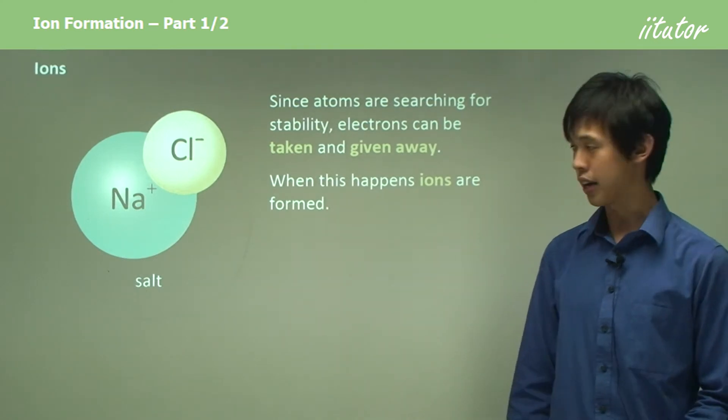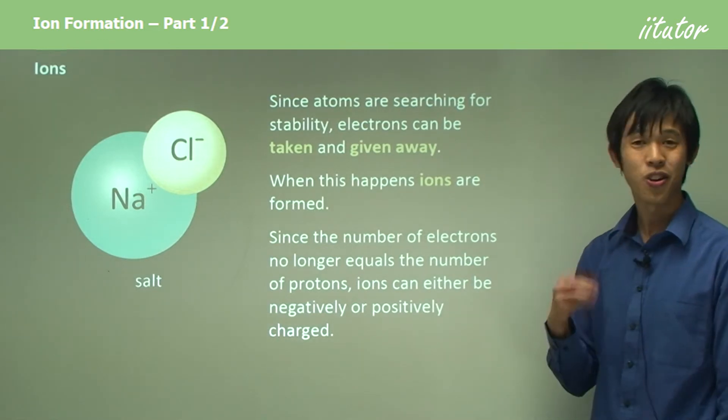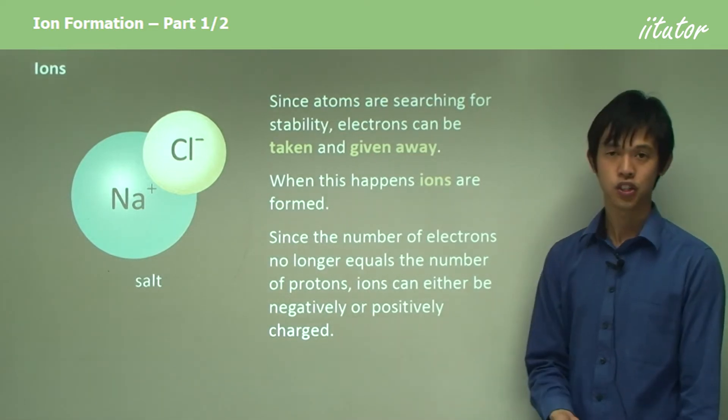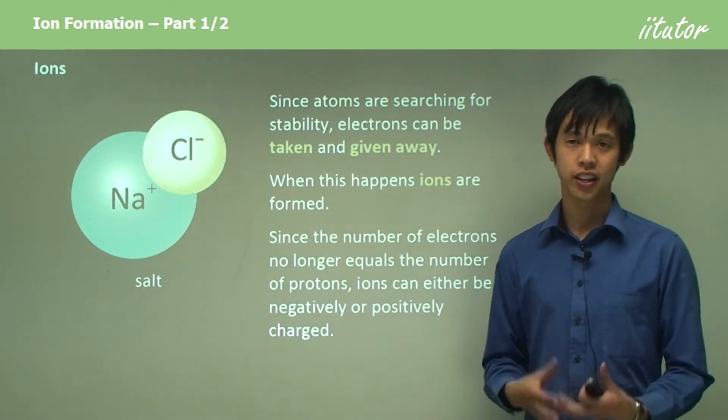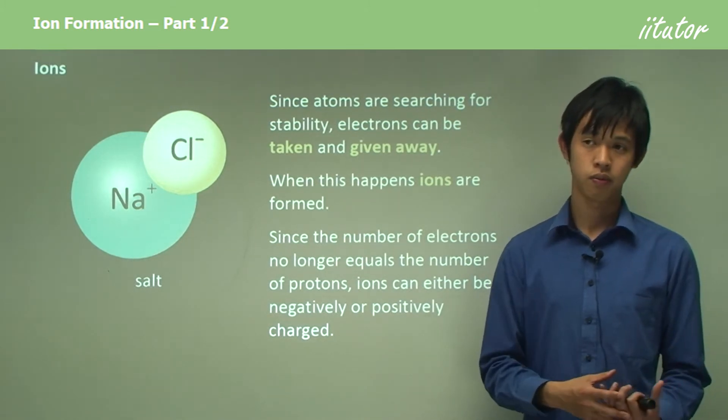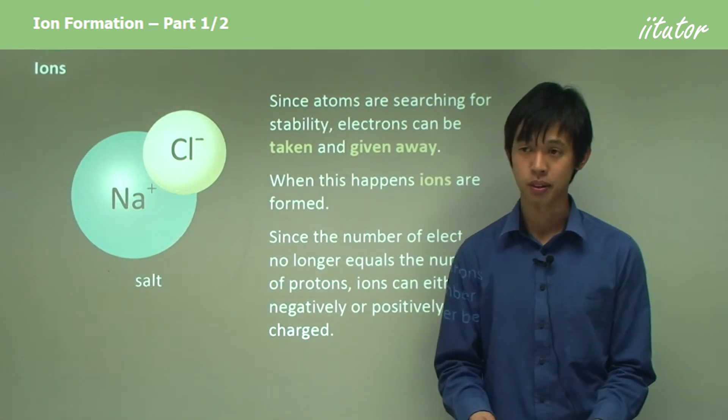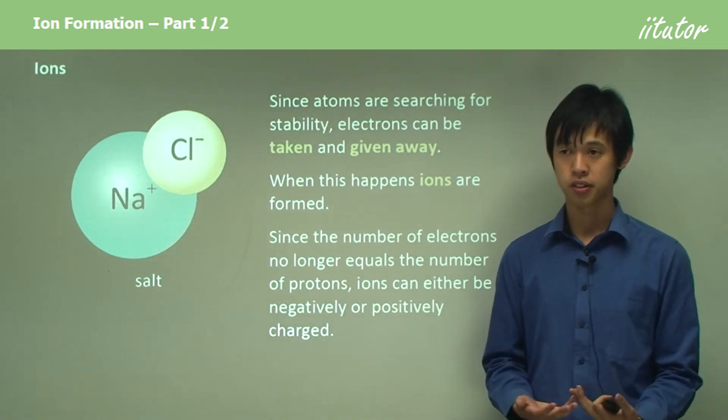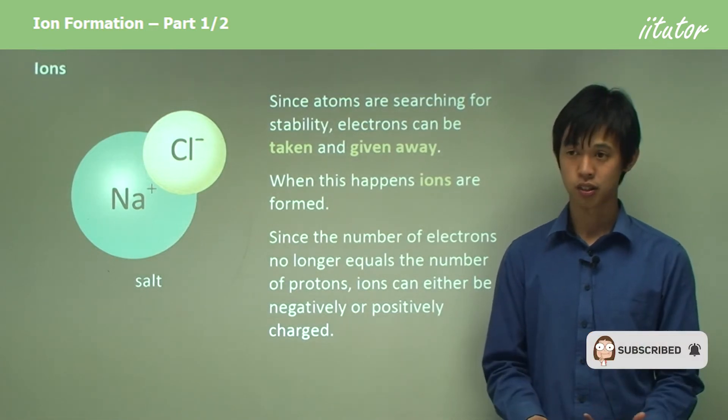So when this happens, ions are formed. When an electron is given away or taken in, that's when you form an ion. Because when you either give away or take an electron, the number of electrons no longer equals the number of protons. And so ions can either be negatively or positively charged. For instance, if I was to give away an electron, then I would have one less electron than protons. There would be more positive charges than negative charges, so I would be a positively charged ion. Now if the opposite happened, I was to take in an electron, now I have one more electron than I do protons, which means I will be negatively charged because there's more electrons, so I'll be a negative ion.